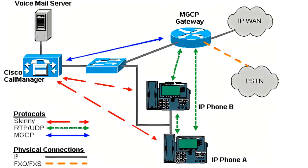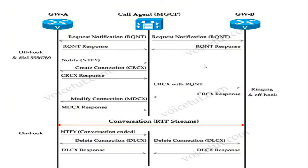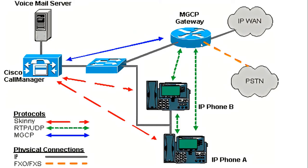In this diagram you can see a Cisco Call Manager with a media gateway controller. Whenever a call establishes, it sends commands to the media gateway controller. The media gateway controller receives commands from the call manager and controls the media of various media gateways, such as an IP gateway or PSTN gateway, managing media establishment for the endpoints.